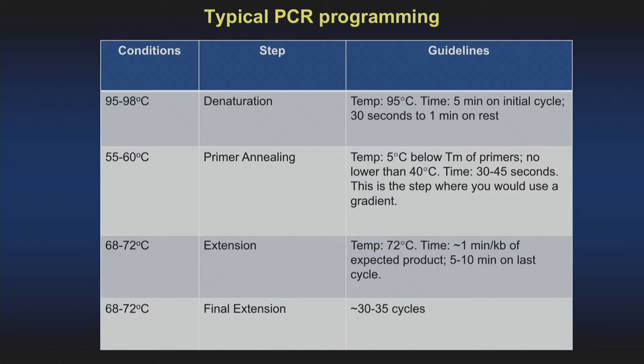At the specific annealing temperature, the primer sequence binds to the template DNA. The DNA polymerase also is added during the PCR reaction — you have a template, a primer, both of which the DNA polymerase binds to — and you supply the dNTPs and DNA elongation happens. Extension by the DNA polymerase occurs at around 68 to 72 degrees centigrade, and the final extension again at 72 degrees. This is the typical programming you employ to amplify a template.